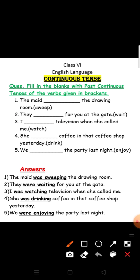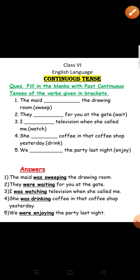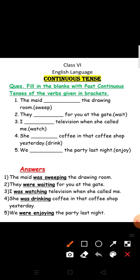Next sentence: she dash coffee in that coffee shop yesterday. Word is drink. 'She' is singular, so we will use 'was' and the ing form of drink, that is 'drinking'. So it will be: she was drinking coffee in that coffee shop yesterday.